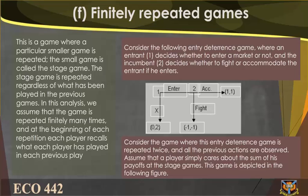Finitely Repeated Games: This is a game where a particular smaller game is repeated. The small game is called the stage game. The stage game is repeated regardless of what has been played in previous games. We assume that the game is repeated finitely many times, and at the beginning of each repetition, each player recalls what each player has played in each previous play.